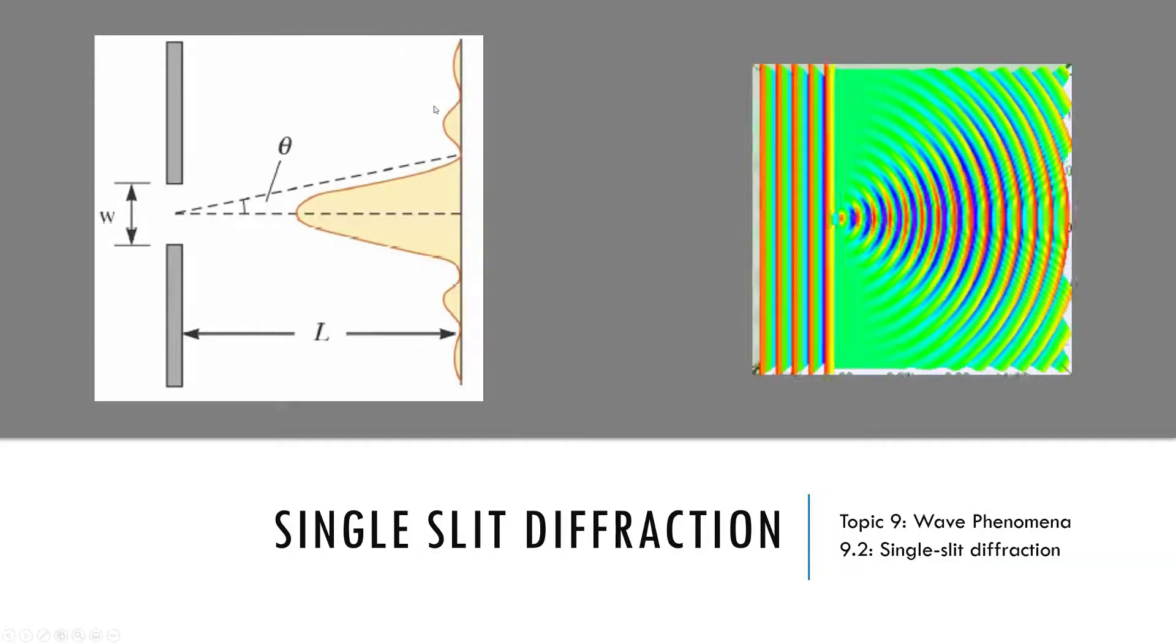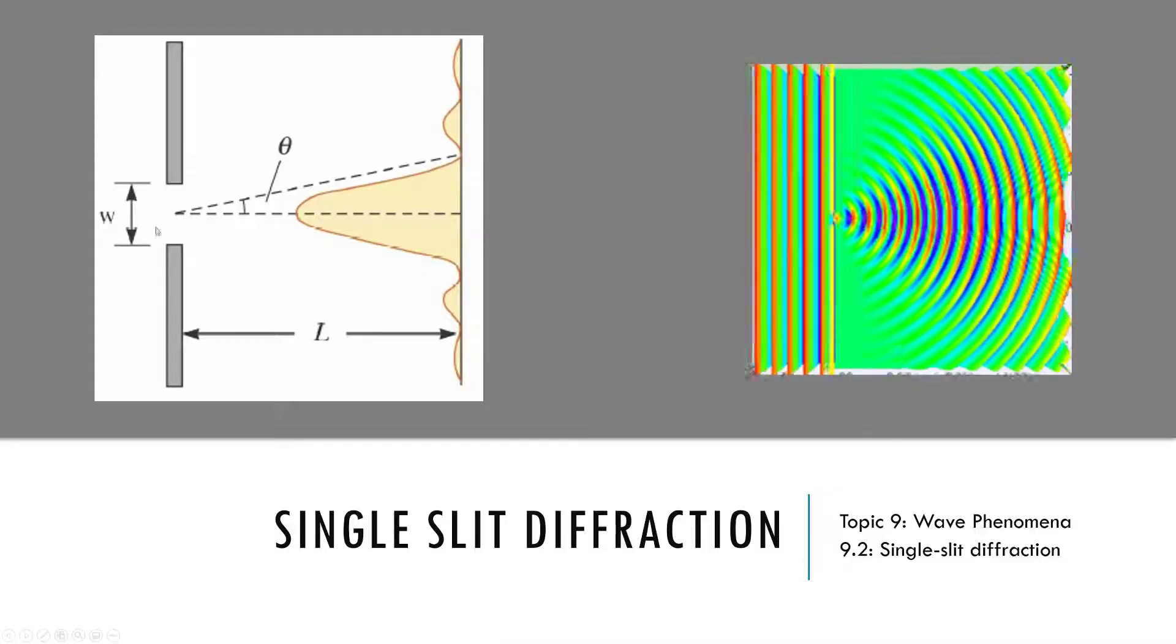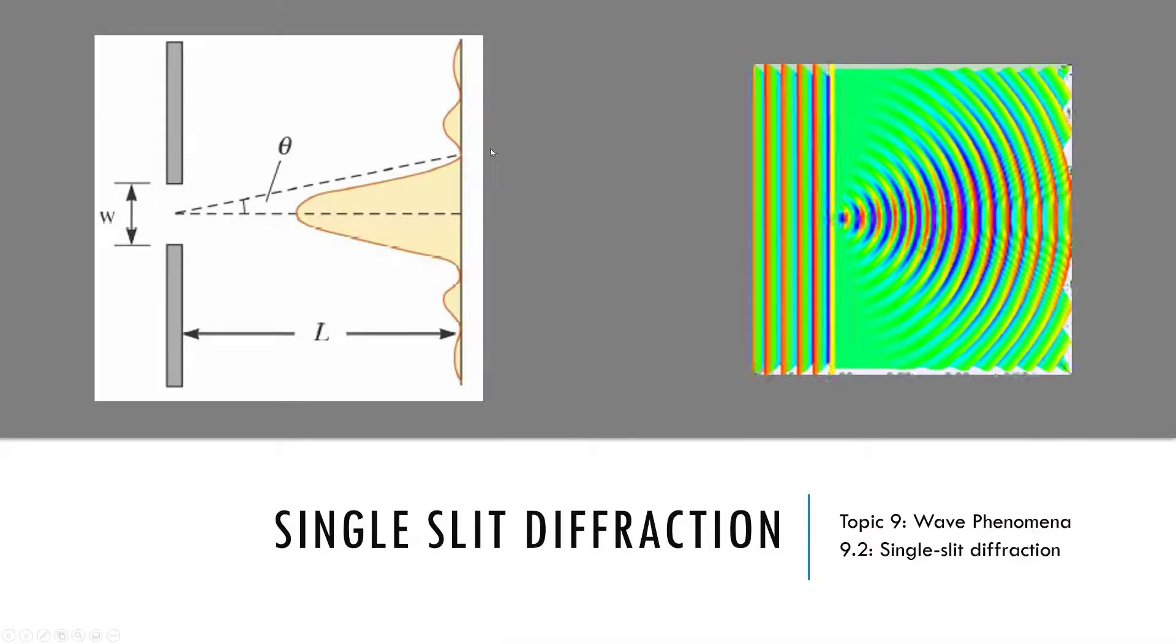So we'll look at the math of single slit diffraction and ask ourselves, why the heck, if light is coming through one opening, why am I getting interference?